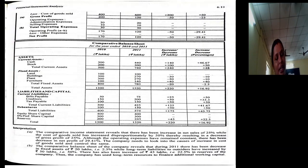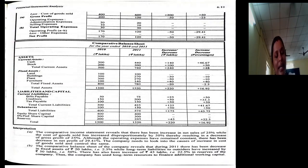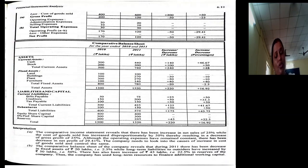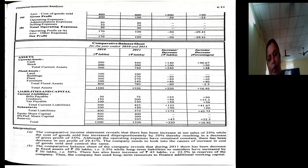On the liability side, they took current liabilities first. When you start assets with current assets, on the liability side you take current liabilities: bills payable, creditors, tax payable — total current liabilities. Then debentures as long-term liability, giving total long-term liability. Then equity share capital, preference share capital, reserves and surplus — anything belonging to shareholders — giving shareholders' fund. Total of current liabilities plus long-term liabilities plus shareholders' fund constitutes total liabilities: 1,300 in the first year and 1,520 in the second year, increased by 220, with a percentage increase of 16.92%.